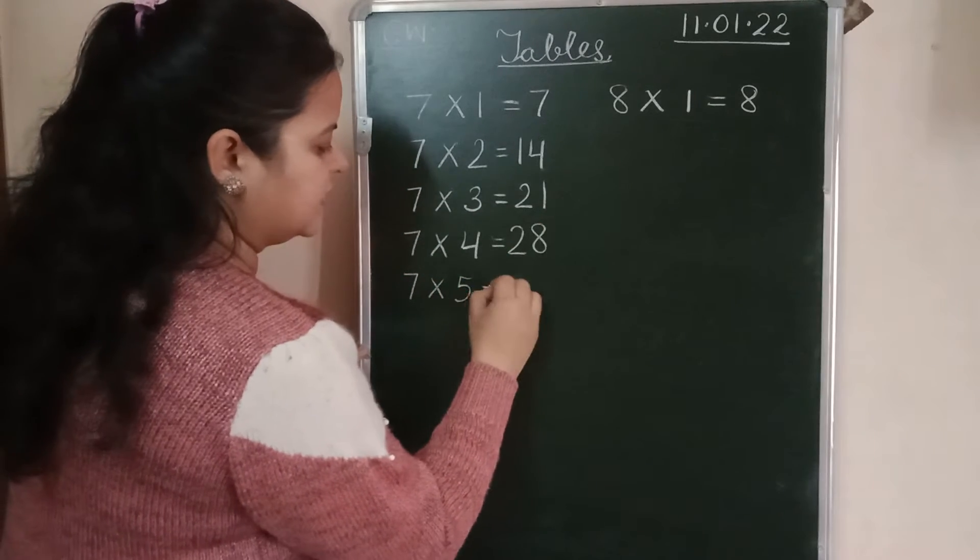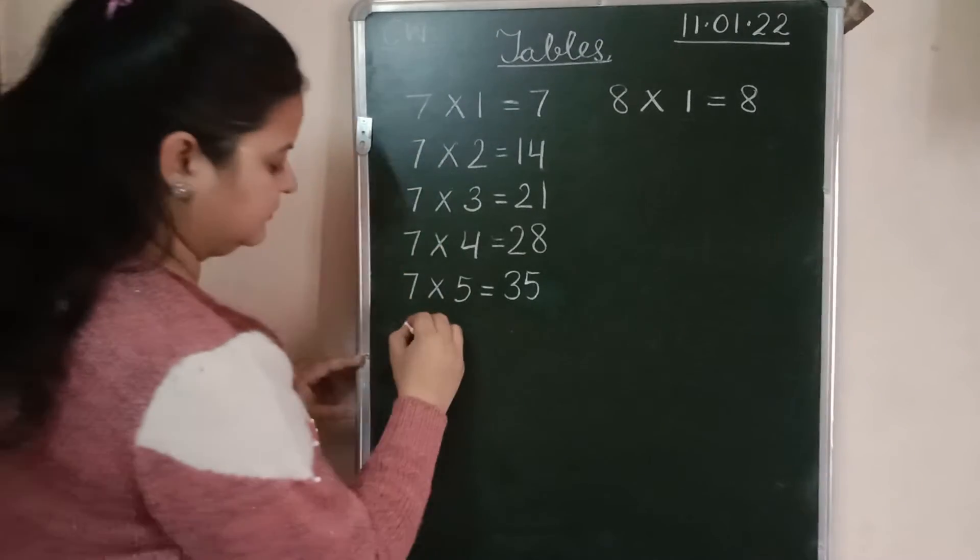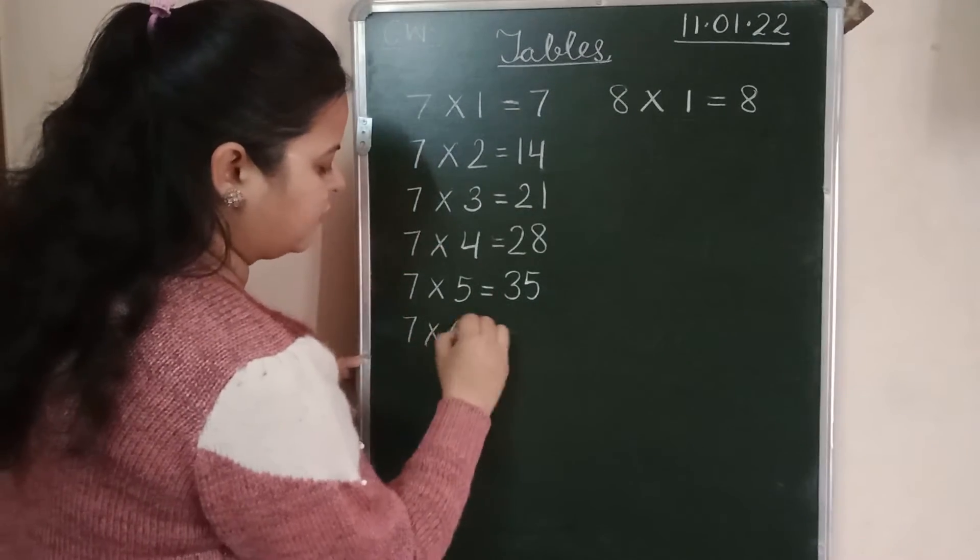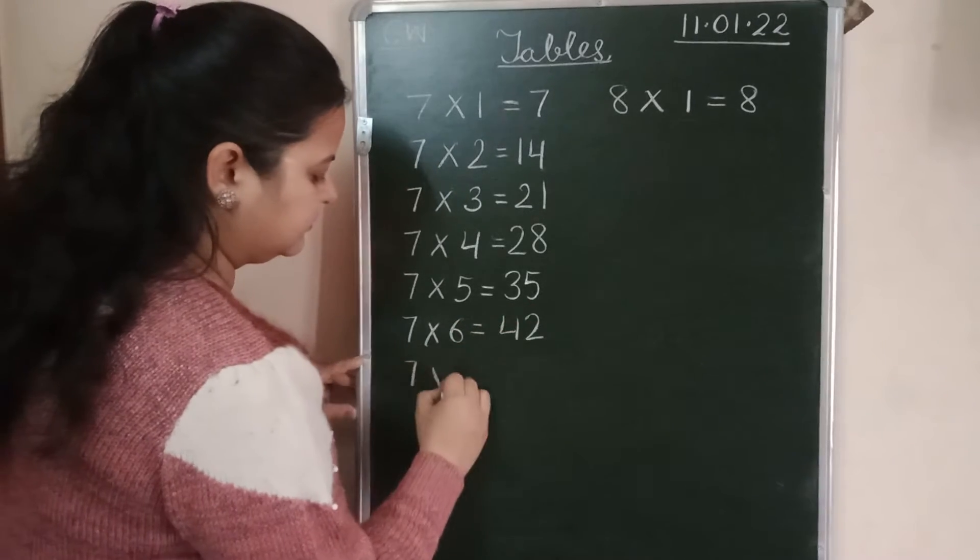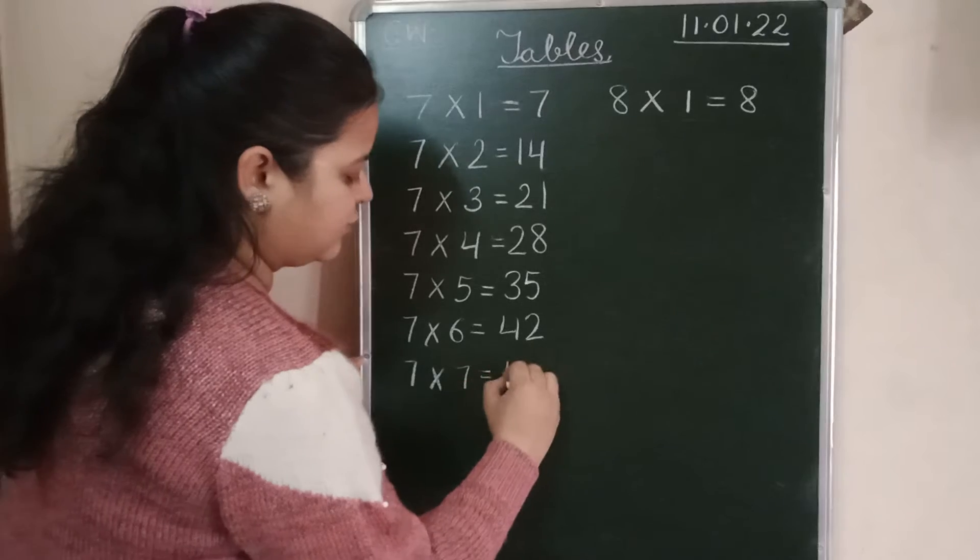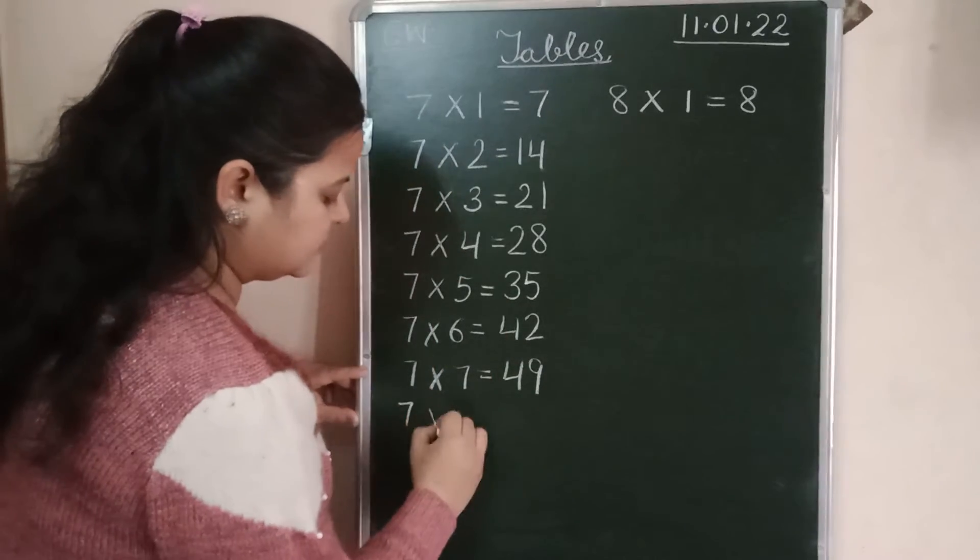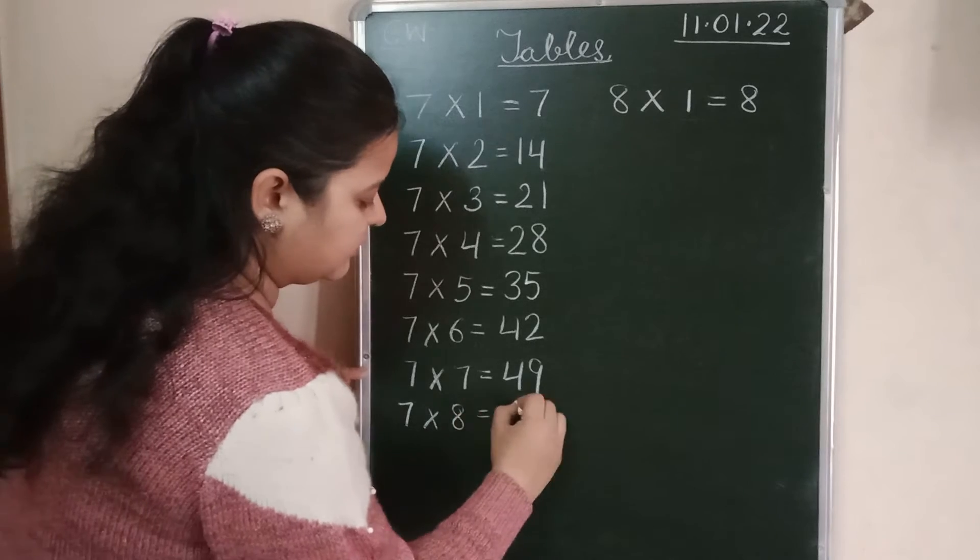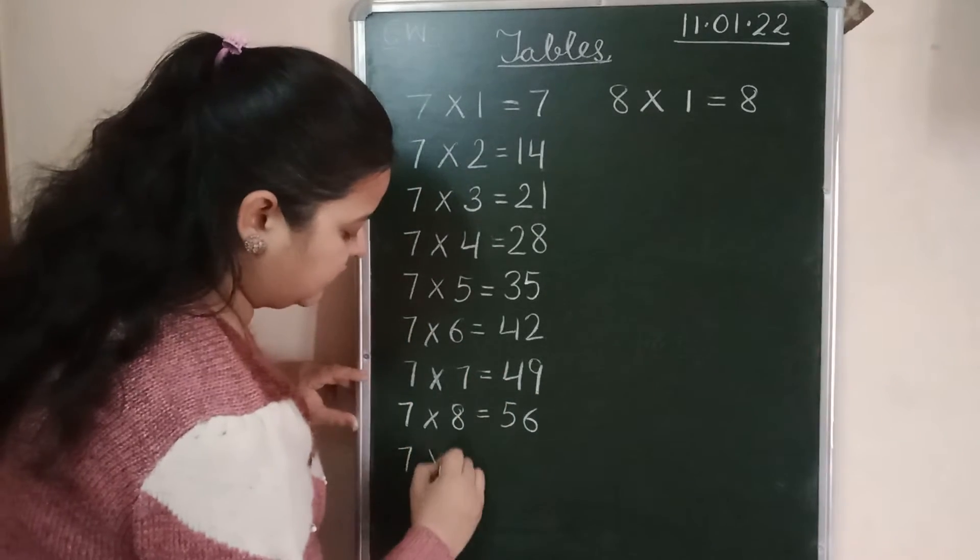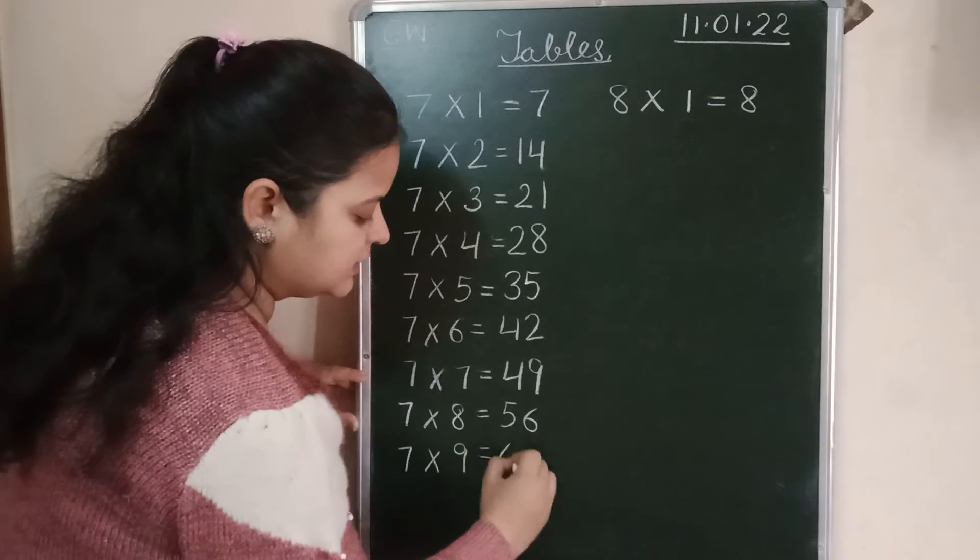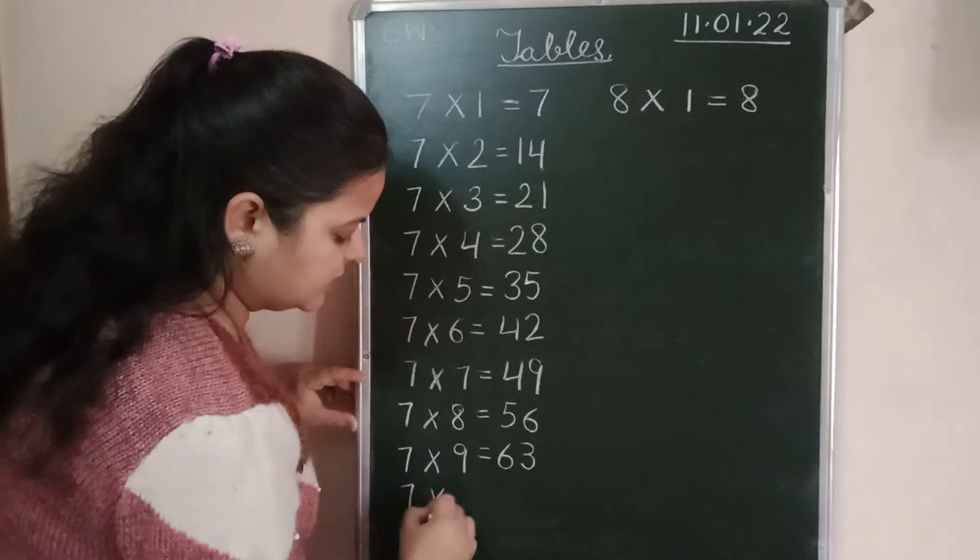7-5s are 35. 7-6s are 42. 7-7s are 49. 7-8s are 56. 7-9s are 63. 7-10s are 70.